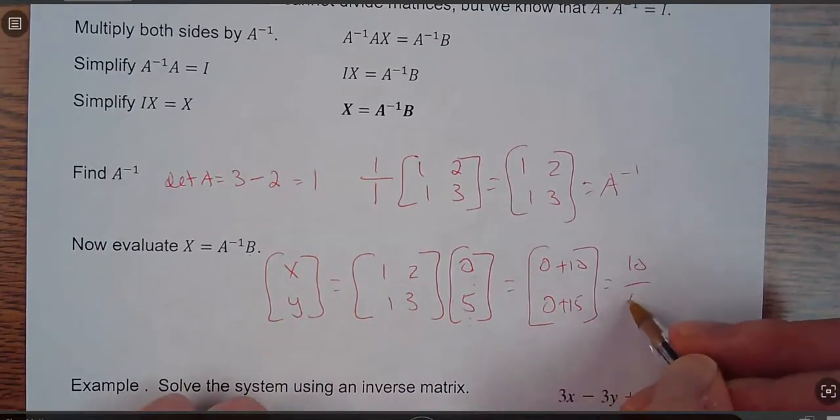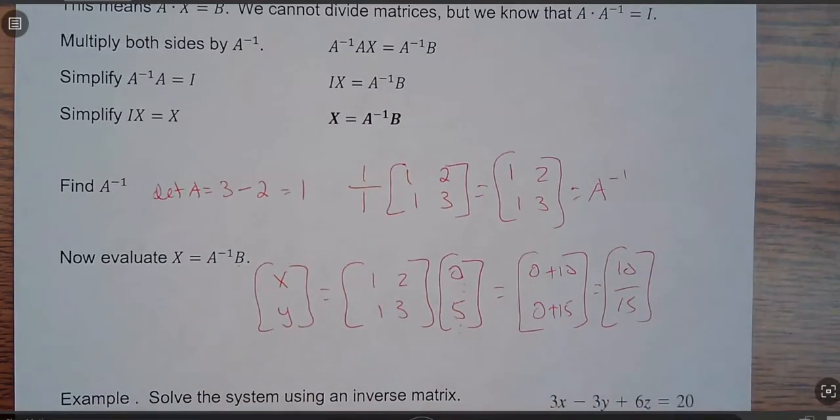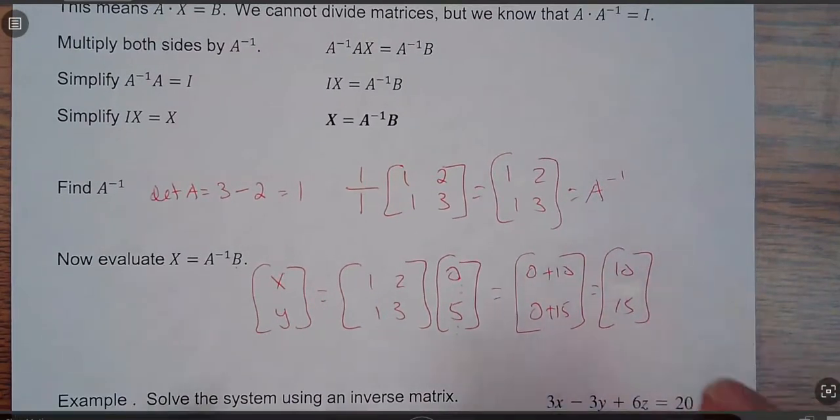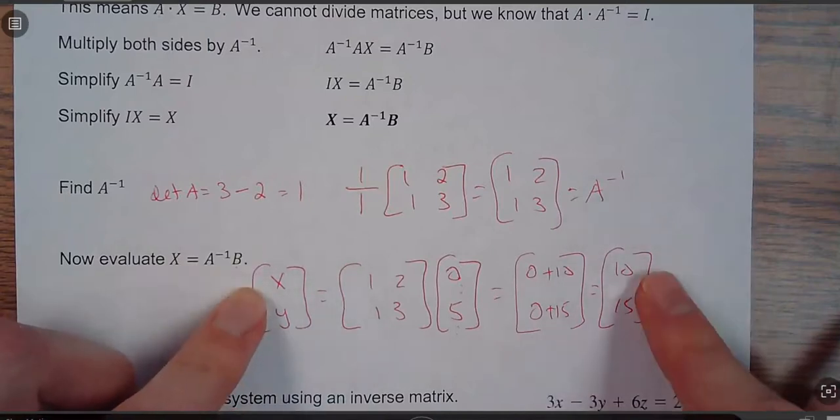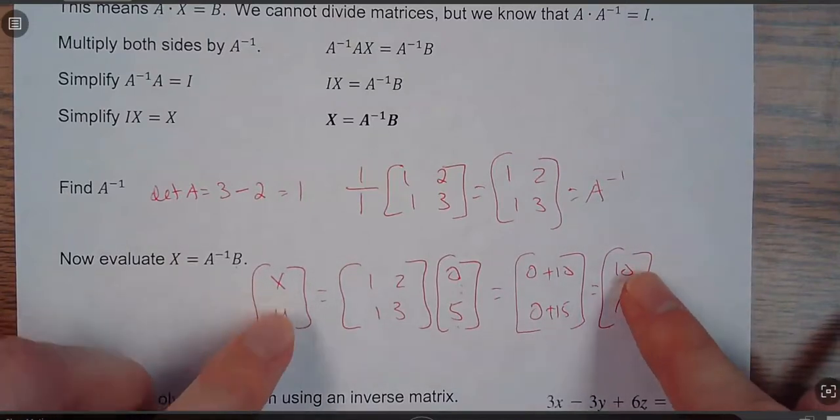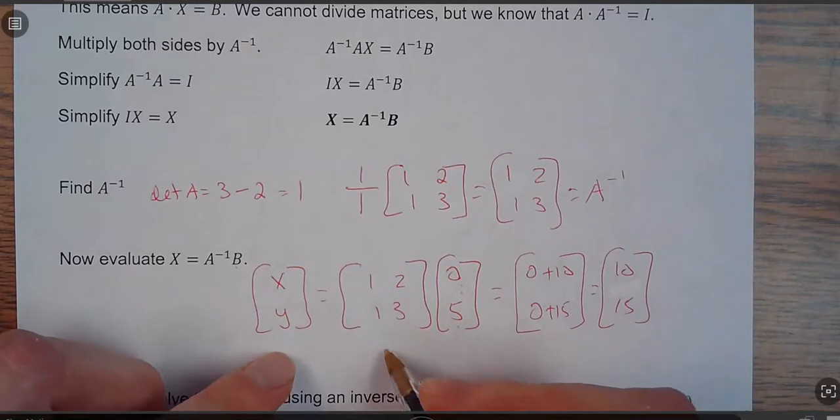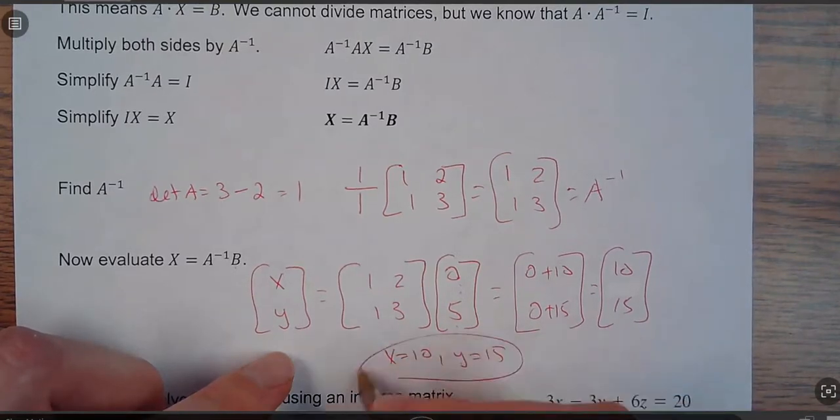So that equals 10, don't know why I put a line there, 15. I'll get rid of that line real quick. And if this matrix equals this matrix, that means x equals 10 and y equals 15. So x equals 10, y equals 15. And those are my answers.